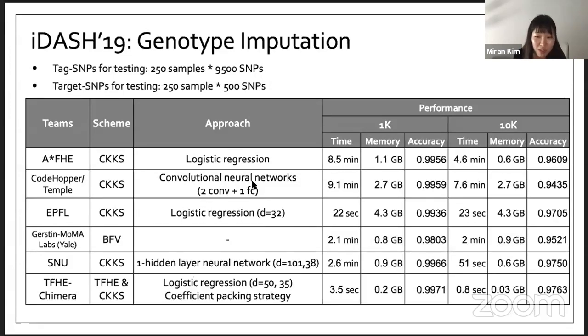This competition is pretty easier than the last two years, but the first solution was by the TFH team. It takes only less than four minutes for the whole secure imputation. I think it really shows the applicability and scalability of HE.